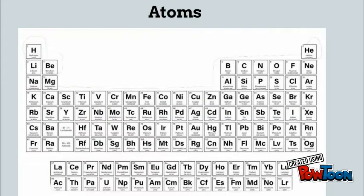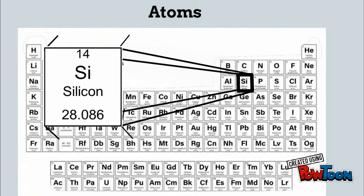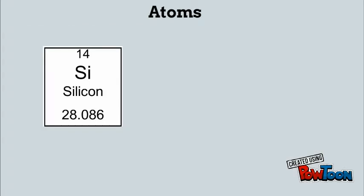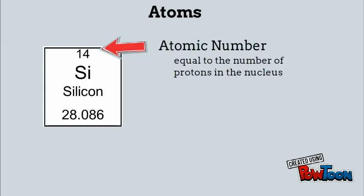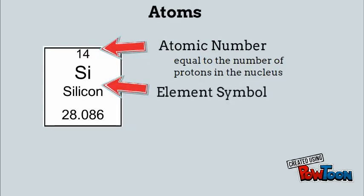Let's start with atoms. If we look at the periodic table and we were to take an element out of that periodic table and blow it up — in this case it's silicon — the first thing that we see is the atomic number. The atomic number is equal to the number of protons inside the nucleus, and it's going to give us a unique number for every element.